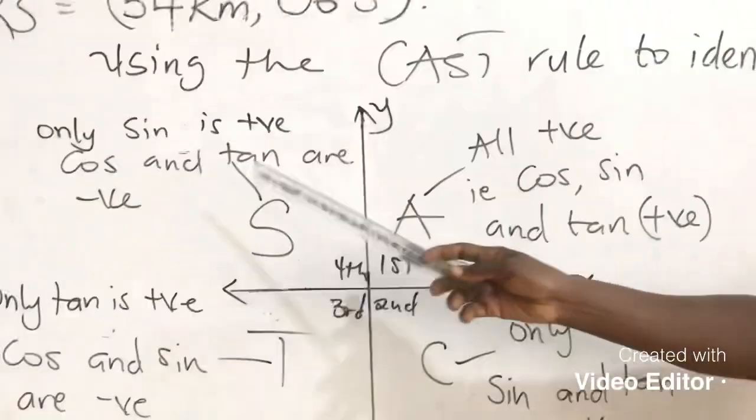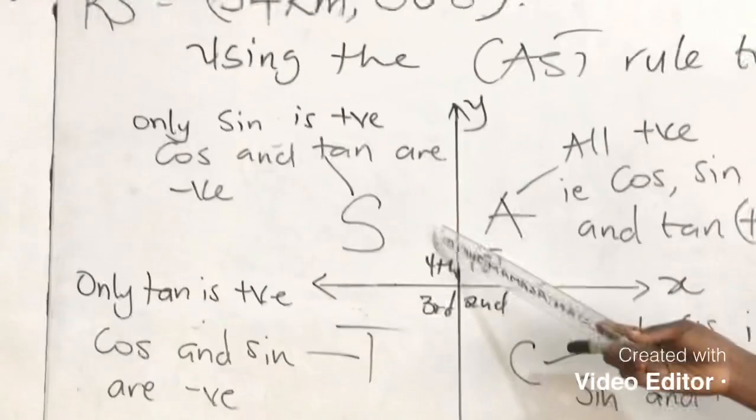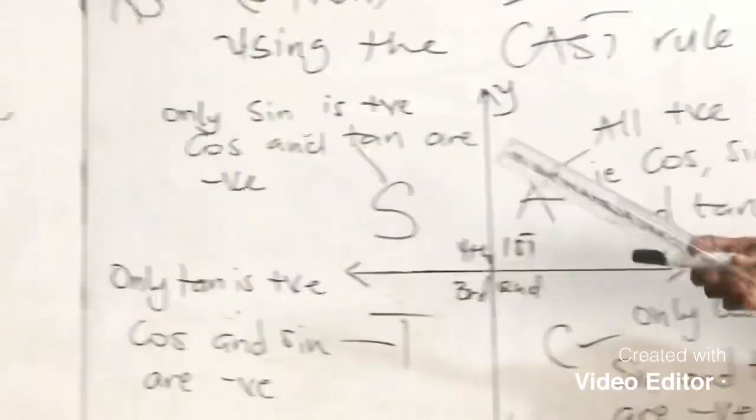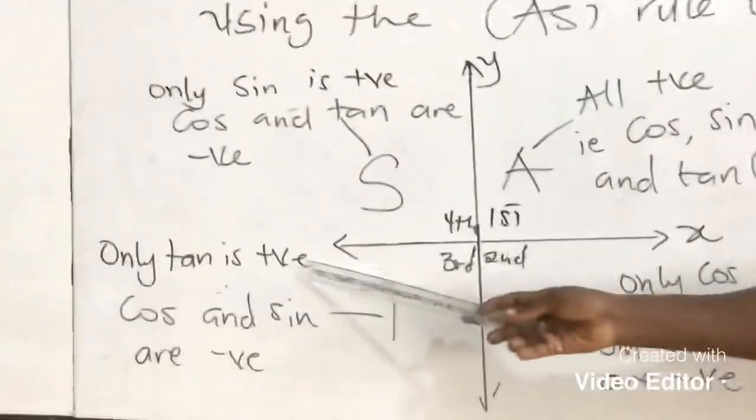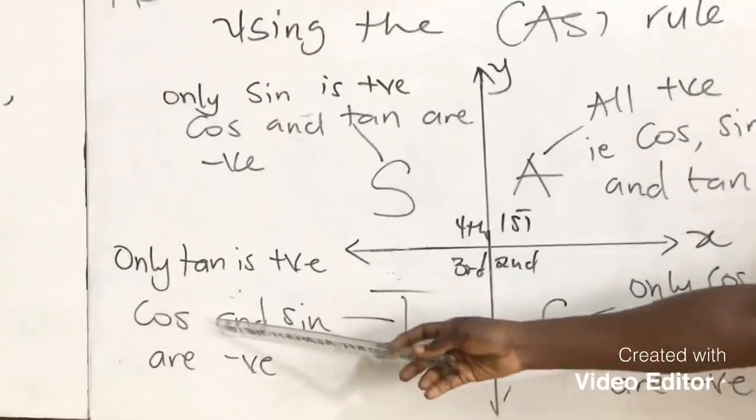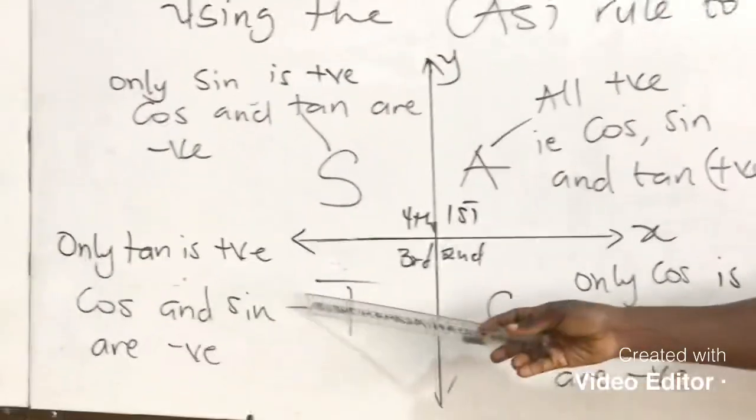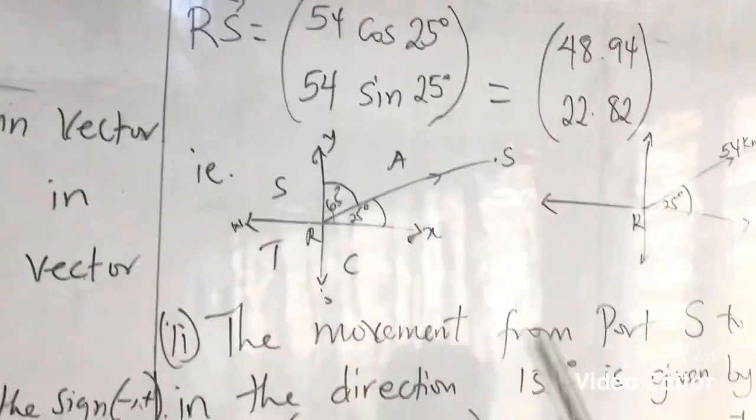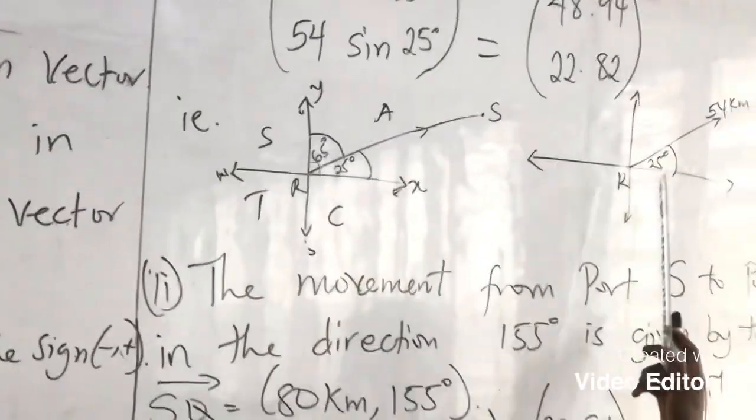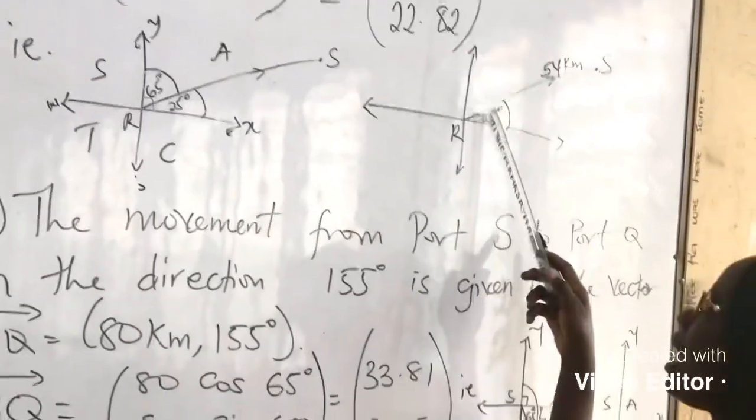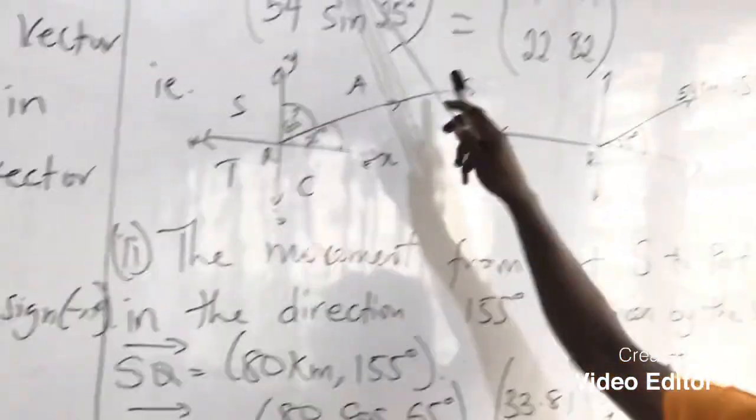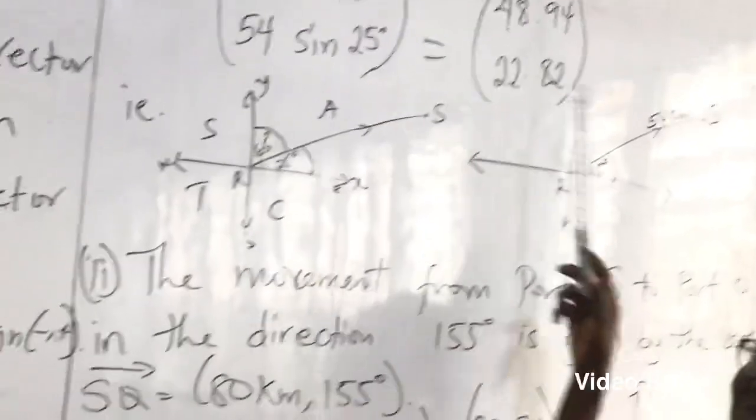S, only sin is positive. So when the direction is falling in the second quadrant, you will get sin to be positive, the rest negative. Then T, only tan is positive. Cos and sin are negative. So after guessing your quadrant, you now present them here. And it's falling in the first quadrant. And by the CAST rule, all are positive. Therefore, cos is positive and sin is positive.